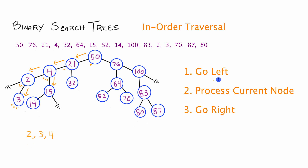Starting at node 15, step one is go left. We put a dot completing step one and traverse left down to node 14. At node 14 we attempt to go left but it doesn't have a left child. Step two tells us to process the current node, so we write 14. Then step three we attempt to go right but can't, since 14 doesn't have a right child. We've completed steps one, two, and three on node 14, so we fall back to node 15. Node 15 has completed step one, so we move to step two — process current node, writing 15. Then we attempt step three but node 15 doesn't have a right child, so we fall back.